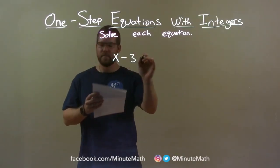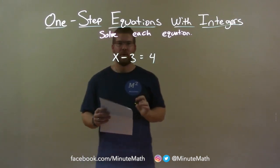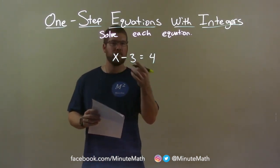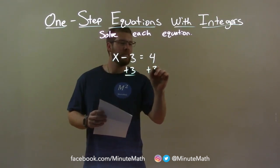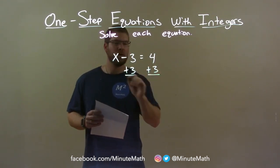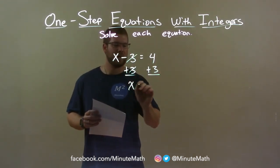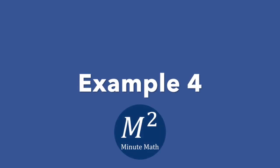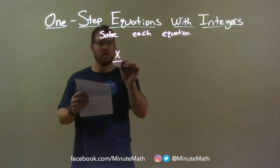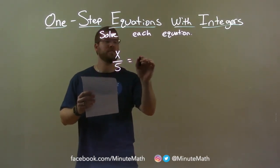x minus 3 equals 4. We want to get x by itself. Opposite of subtracting 3 is adding 3. I'm going to add 3 to both sides. This eliminates 3 on the left side, giving me x by itself, and 4 plus 3 is 7. So my final answer here is x equals 7. Next: x over 5 equals 2.